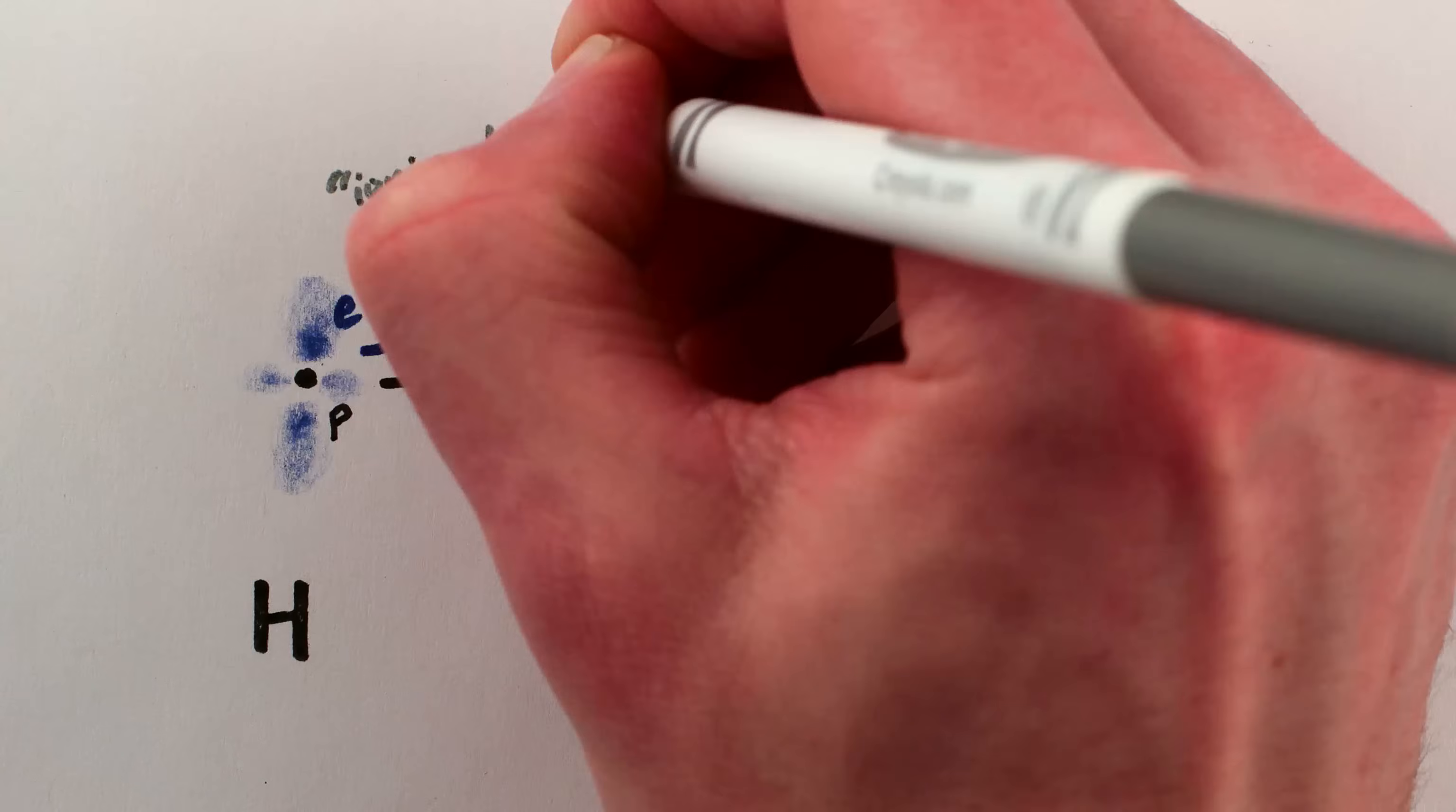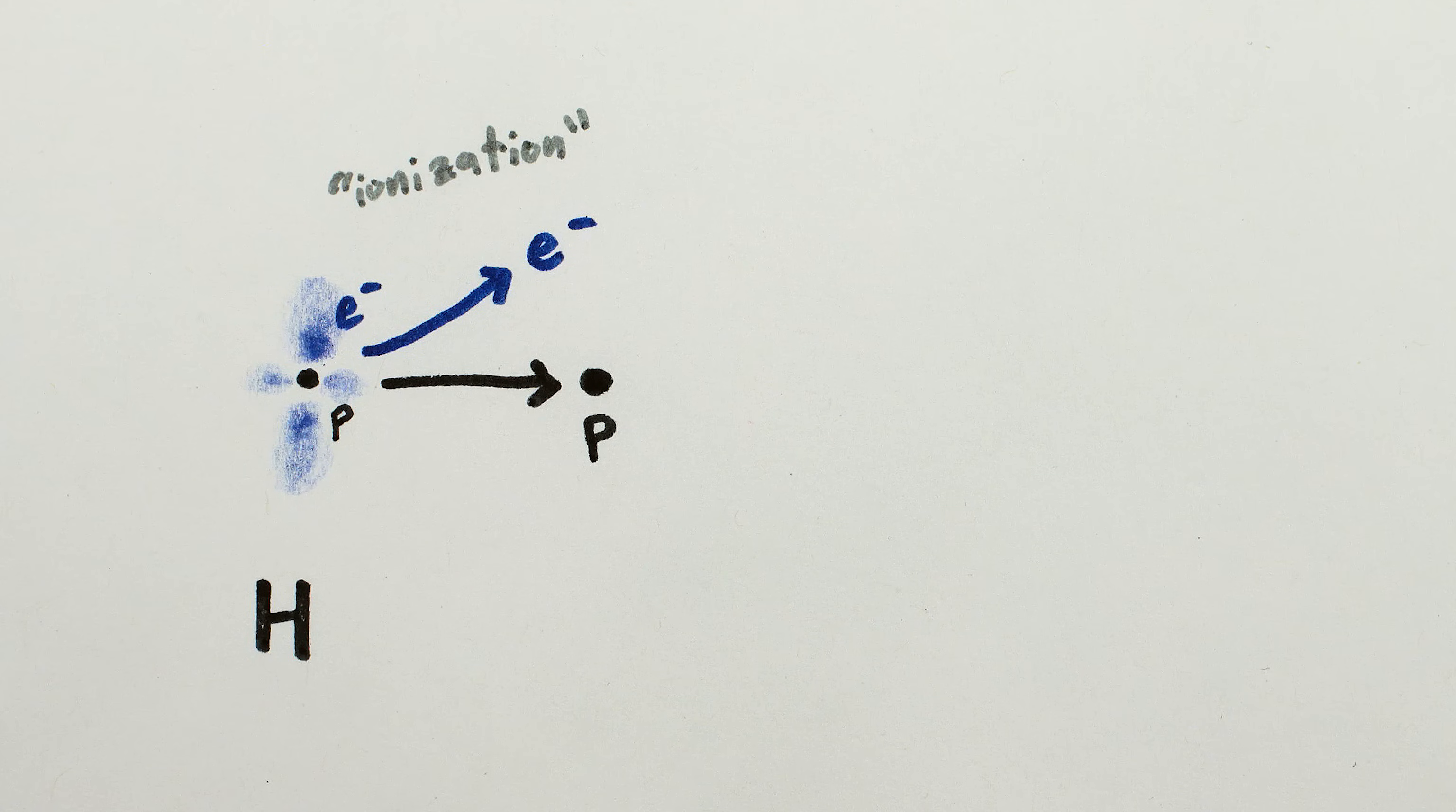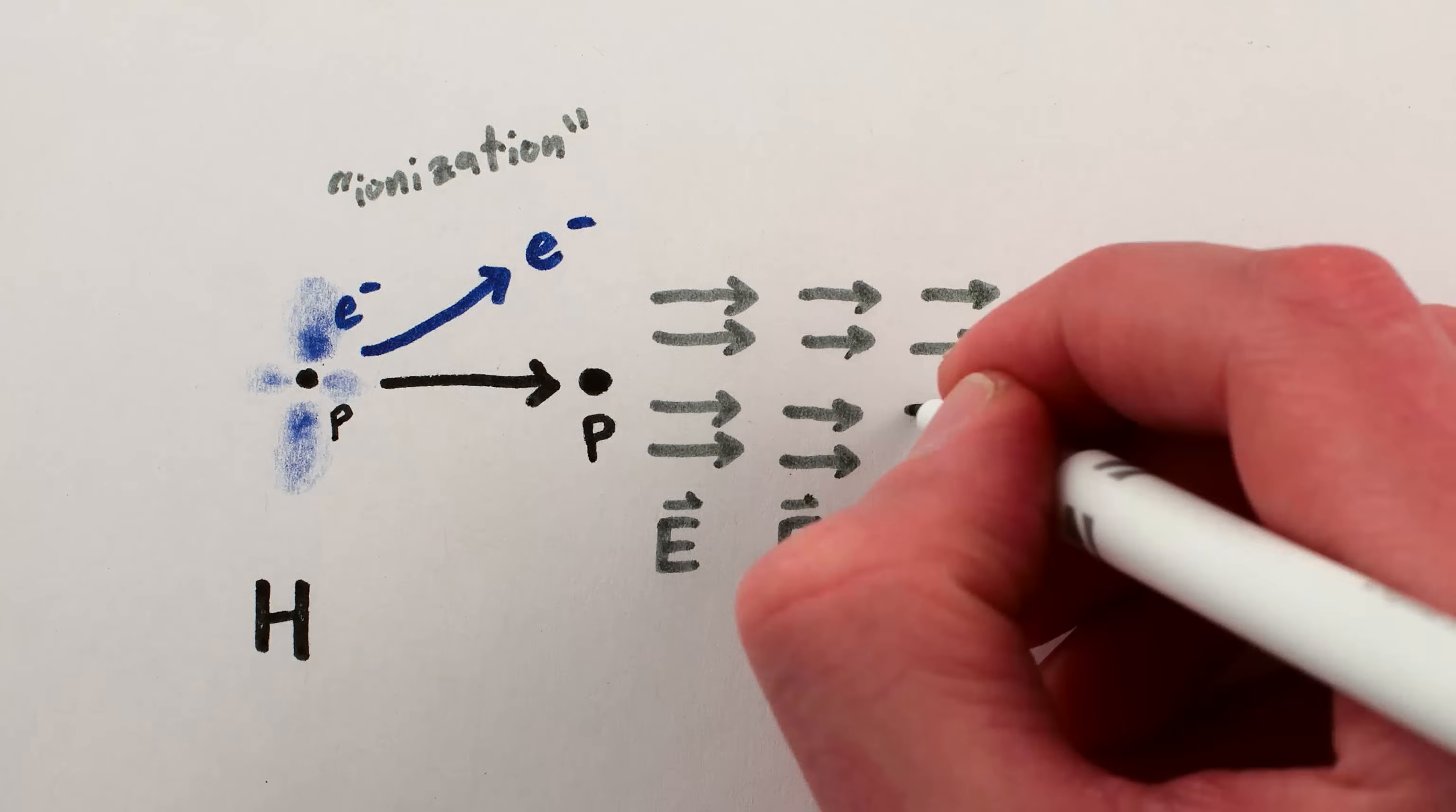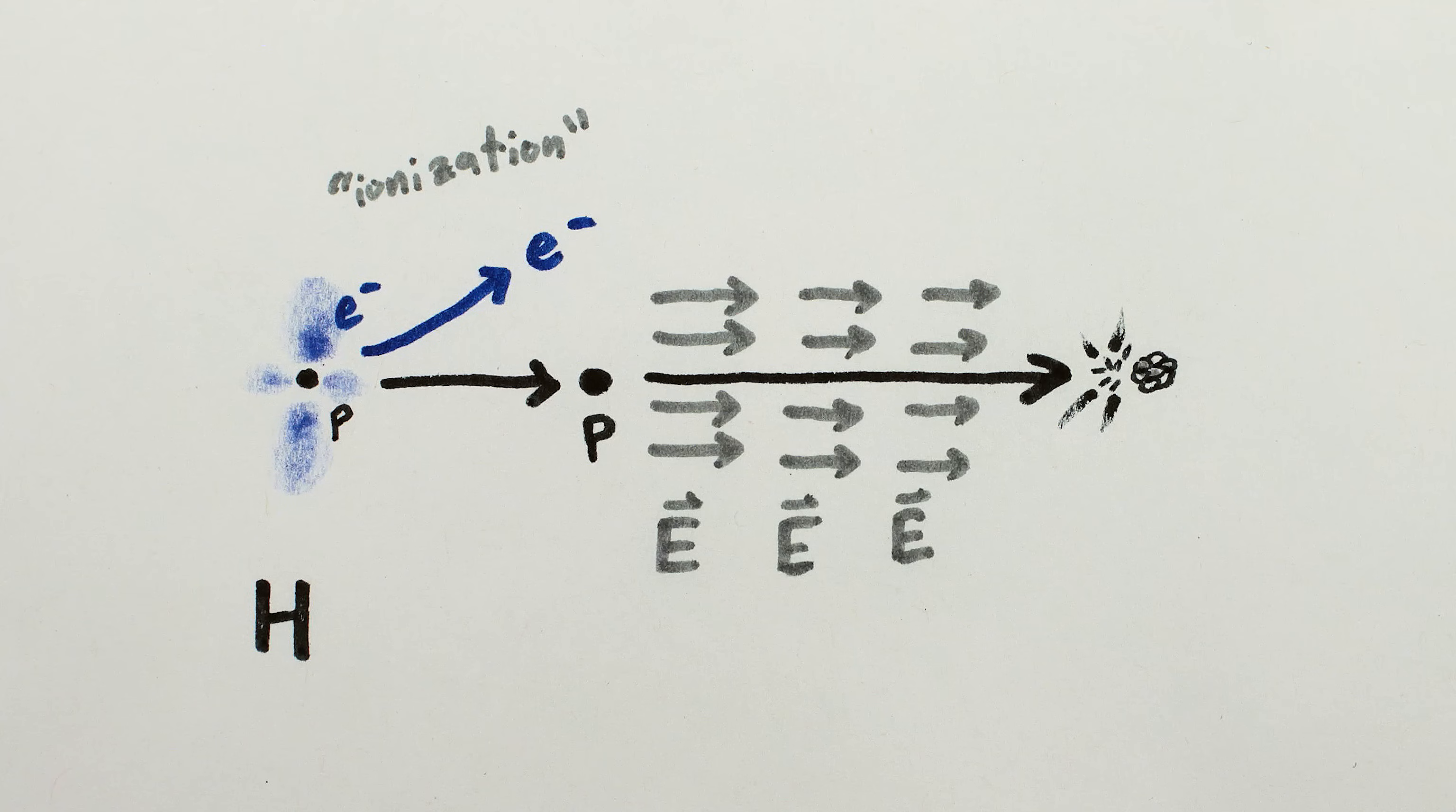First, you take hydrogen and you strip off the electrons, leaving you with protons. Then you accelerate the protons really fast in an electric field – or a bunch of electric fields – and crash them into some other atomic nuclei, like lithium or carbon or whatever.